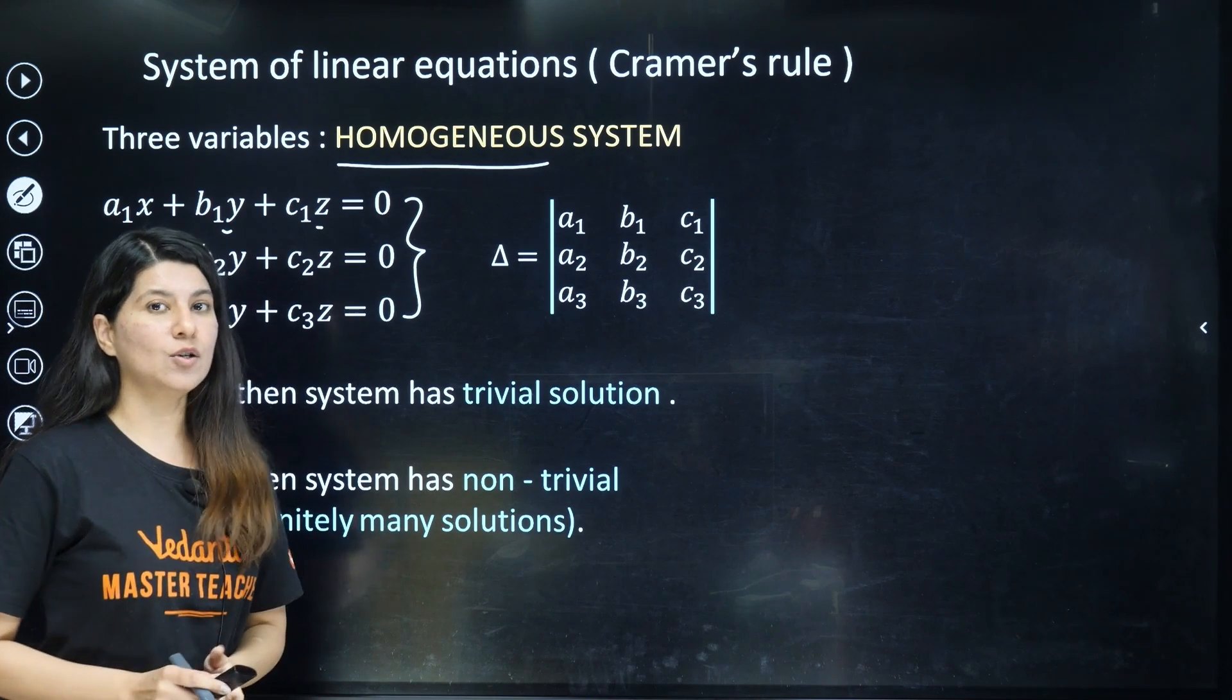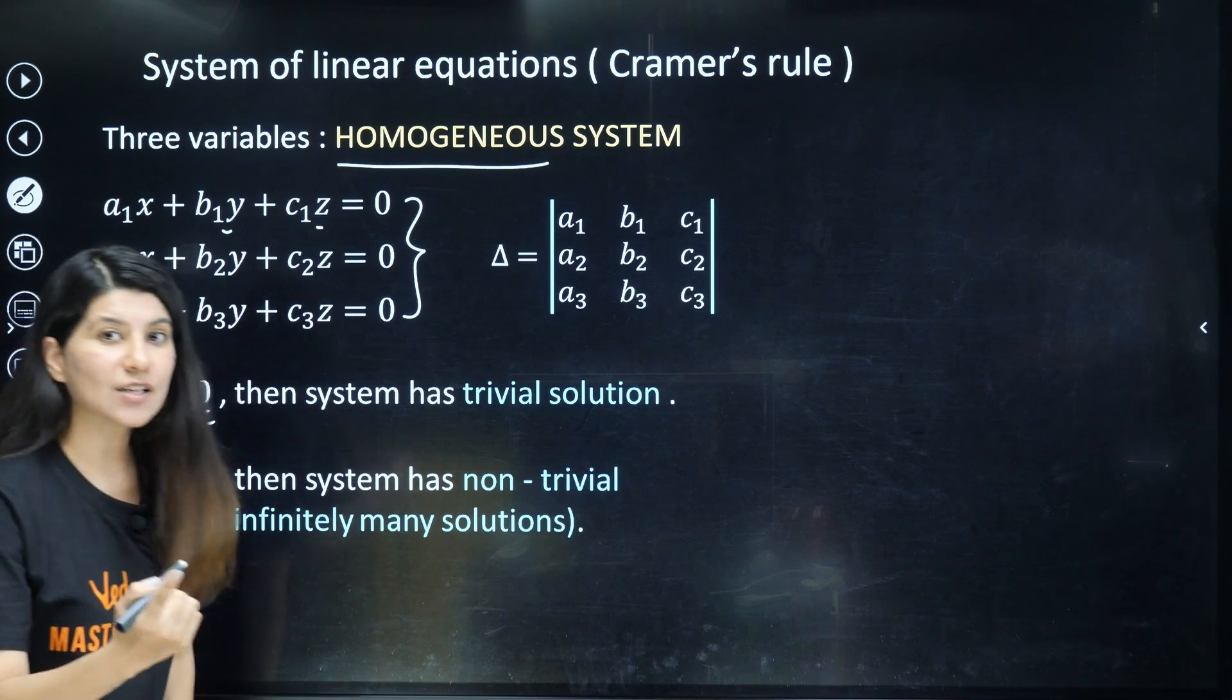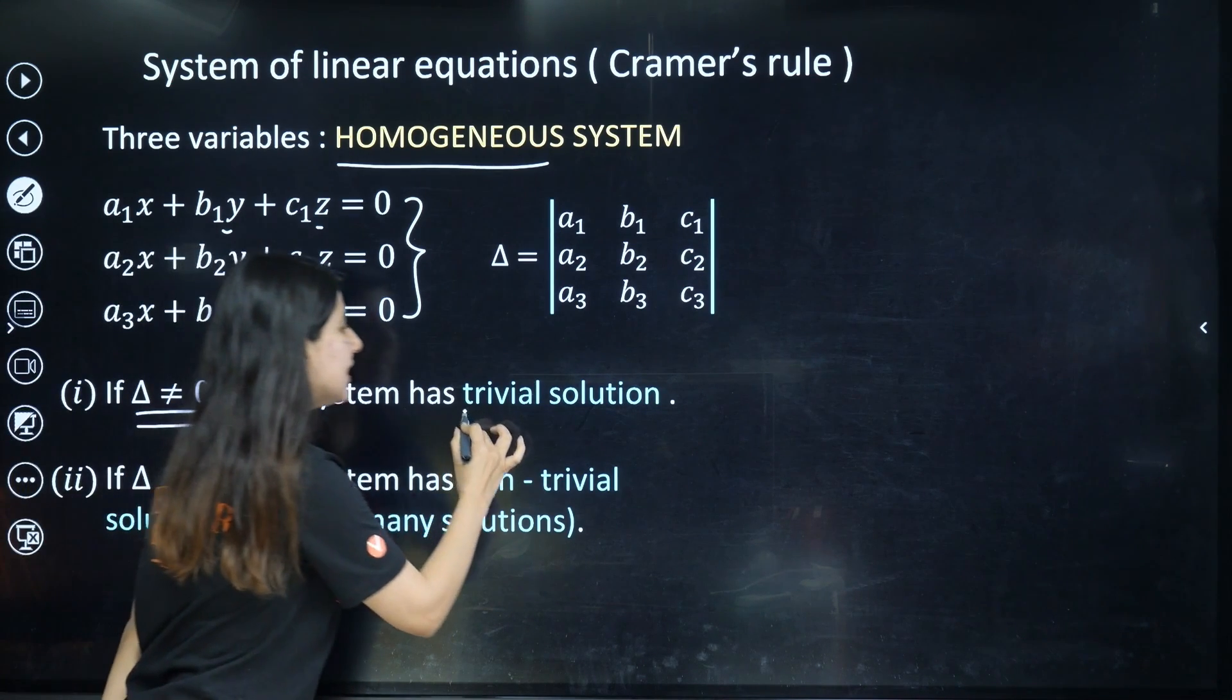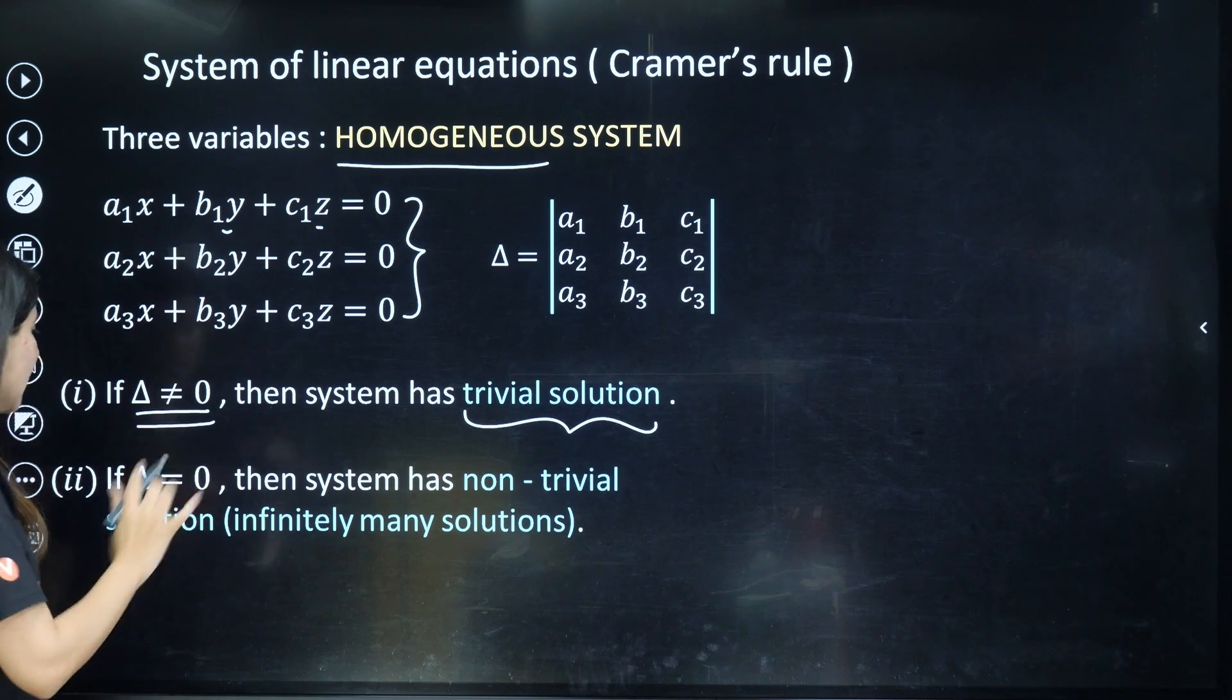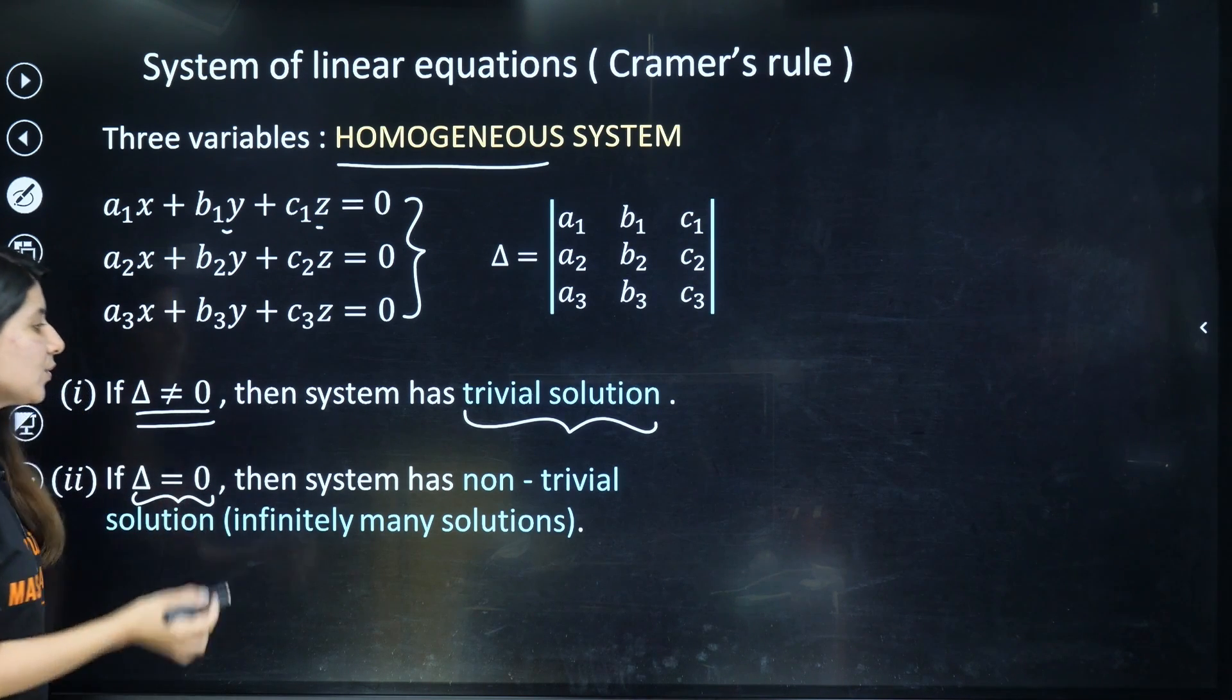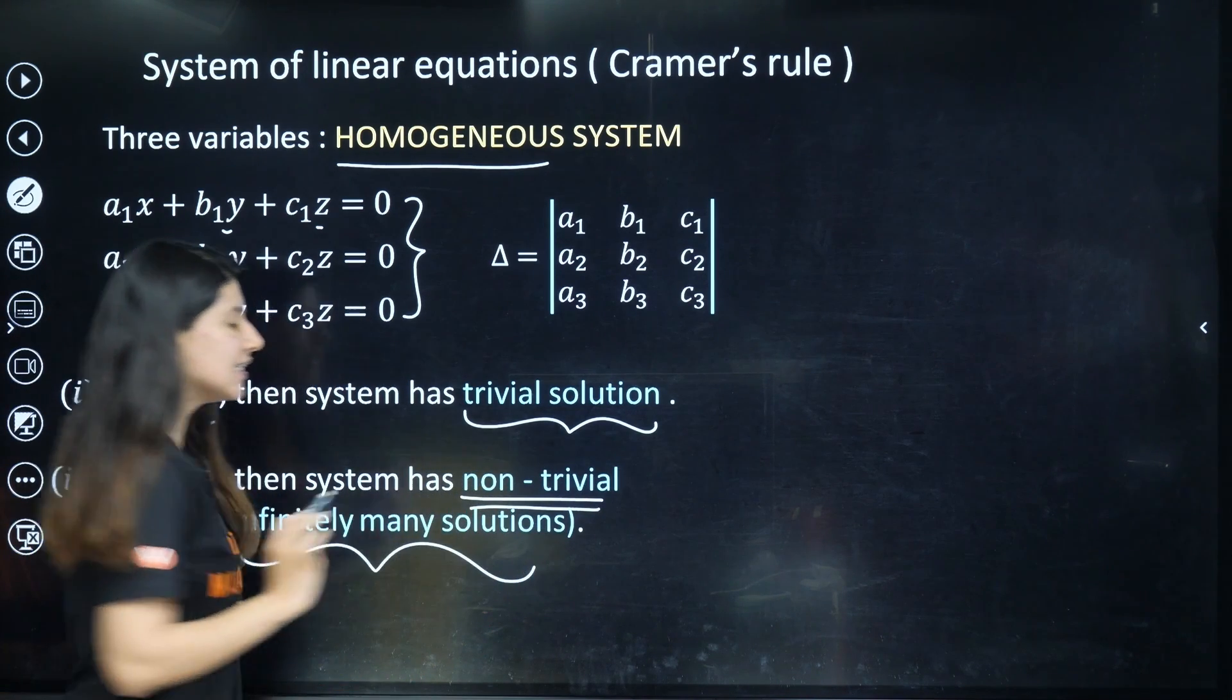Now, Cramer's law says that when delta, your determinant, is non-zero, then you have trivial solution related to all three equations. And when your determinant is equal to zero, it has non-trivial solution or you can say infinitely many solutions.